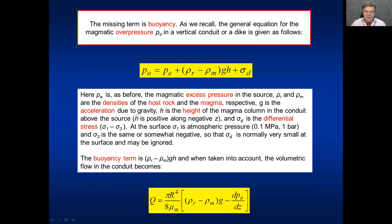So we have looked at this here. So at the surface, the stress difference or differential stress, sigma one minus sigma three, this sigma d is basically zero. The sigma one is the atmospheric pressure 0.1 megapascal or one bar. And sigma three can be, of course, at the top of the dike or the conduit can be slightly negative, but it's basically zero there. And the buoyancy term is therefore coming into account here. And then the volumetric flow rate will be this one here. So the buoyancy term is coming in here in this ordinary differential equation.